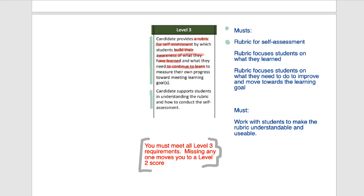The second thing that matters: first is a rubric for self-assessment; second is focusing students on what they learned — describing what they feel confident in and what they're not quite clear about. The third point is the rubric focuses students on what they need to do to improve, giving them direction for their learning. Those are the three requirements for the first block.